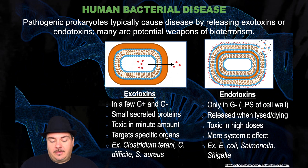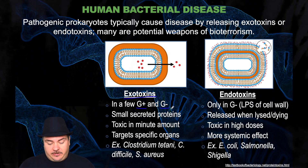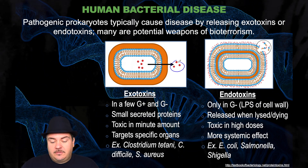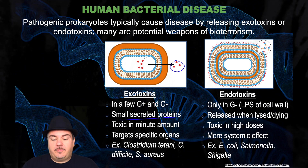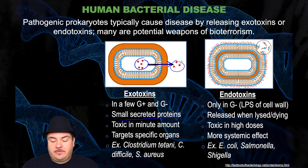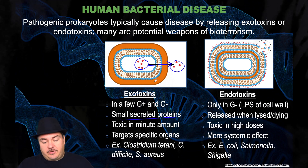What is the difference? Exotoxins are found in a few gram-positive and gram-negative bacteria. These toxins are small secreted proteins — in other words, the bacteria makes them and then secretes or releases them into their environment. They're toxic in very, very small amounts, and they target specific organs. Those are exotoxins.